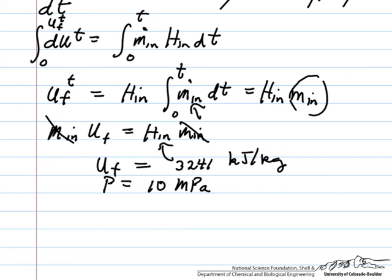And at the steam tables, the temperature that corresponds to this internal energy at 10 MPa is around 600 degrees centigrade. So this shows that the temperature increases rather significantly from 450 centigrade to 600 degrees centigrade when we fill this tank.